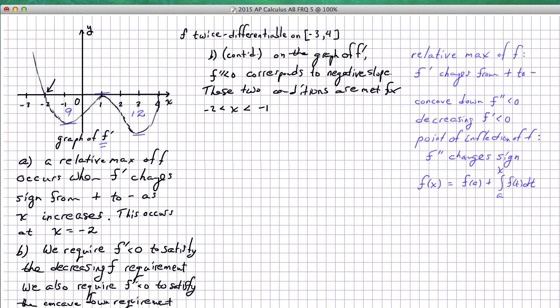f prime continues to be negative all the way through to the end of 4, but we also have to satisfy that the slope itself is negative, and that only occurs from 1 to 3. So that's our second location.